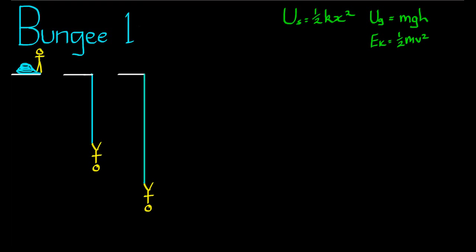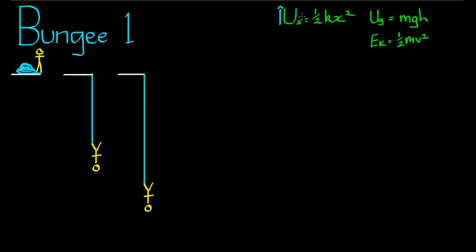The basic gist of it is, as you fall, you pick up kinetic energy because your gravitational potential energy goes down and your kinetic energy goes up. But then as you fall to a certain point, the bungee rope starts to stretch. As it's stretching, the spring potential energy is going up, and therefore your kinetic energy is going down. The complicated thing is, while the spring potential energy is going up and your kinetic energy is going down, your gravitational potential energy is also going down. So we've got three different forms of energy being exchanged all at once.